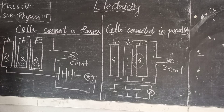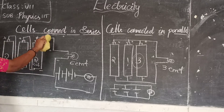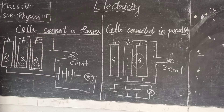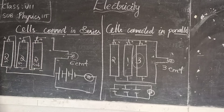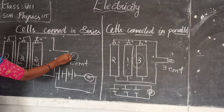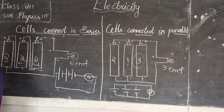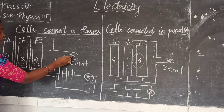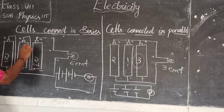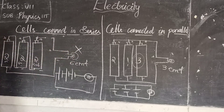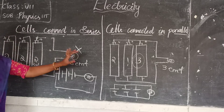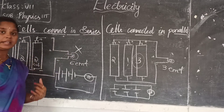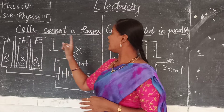Next point: if the circuit is opened in series, will the current flow? If a connection is broken here, the current has stopped at that point. There is no flow from there, meaning the bulb is not getting any source of electricity. So the bulb will not glow in series if the circuit is open. If there is an open circuit, the bulb does not glow in series.